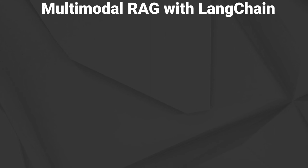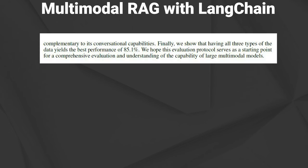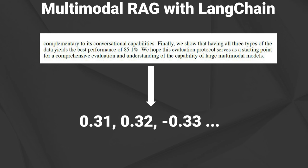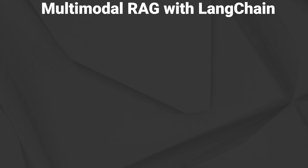Retrieval augmented generation has become a standard when you want to feed a large language model with your own knowledge base. If you've got text files, this is quite easy. Convert the text into a vector using an embedding model and store everything into a vector database. But how does this work with more complex data like a PDF?